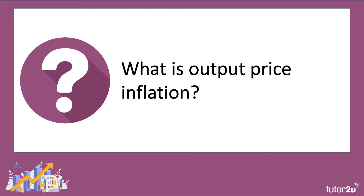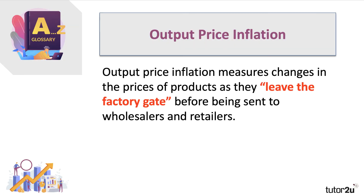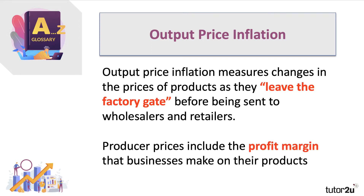Output price inflation measures inflation in the prices of products as they leave the factory gate. Inputs come in, output is produced, and at that stage of production we measure output price inflation, before products are sent to wholesalers and retailers. Producer prices include the profit margin that businesses make, so in addition to costs such as labour, raw materials, energy, building insurance, and rent, producers will be adding their own profit margin on top.